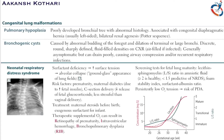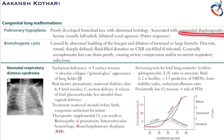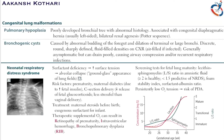Congenital lung malformations include pulmonary hypoplasia and bronchogenic cysts. Pulmonary hypoplasia involves a poorly developed bronchial tree with abnormal histology. It is associated with congenital diaphragmatic hernia, which is usually left-sided, and oligohydramnios or bilateral renal agenesis via Potter sequence.